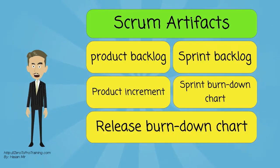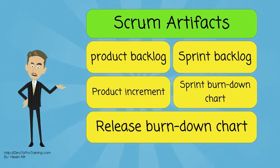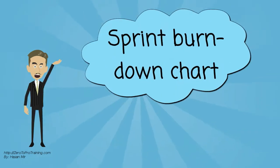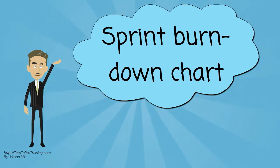The following are the artifacts involved in a scrum project: Product Backlog, Sprint Backlog, Product Increment, Sprint Burndown Chart, and Release Burndown Chart. In this video, we will talk about the Sprint Burndown Chart.